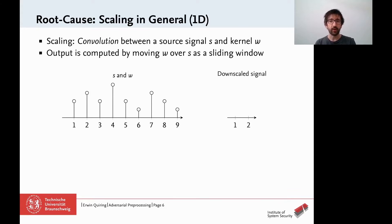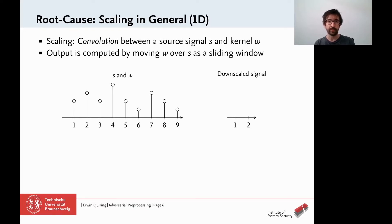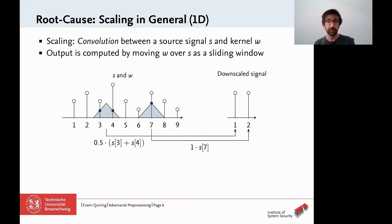Let's recap how scaling works. For simplicity, we consider a one-dimensional signal. The scaling operation can be described as a convolution between the source signal and a kernel function, similar to the convolutional layer in convolutional neural networks. For each position in the downscaled image, the kernel combines a set of pixels from the source image using a specific weighting. The kernel is a window that moves over the source signal, and each pixel within this window is multiplied by a respective weight. As an example, assume we want to scale a signal of 9 pixels to 2 pixels. We place our kernel window on the signal, multiply the pixels inside by their respective weights, then move the window to the next position, where just one pixel falls in scope and we simply copy it.